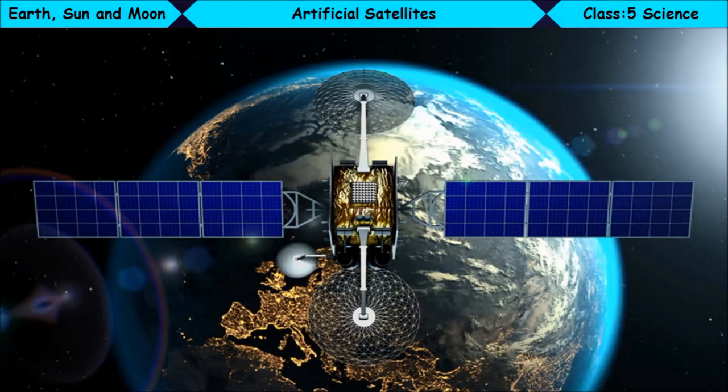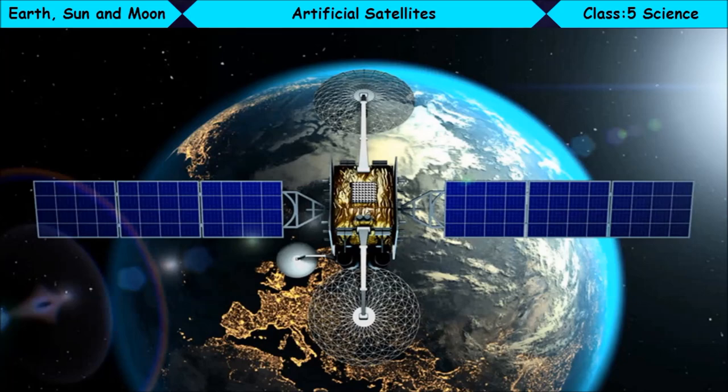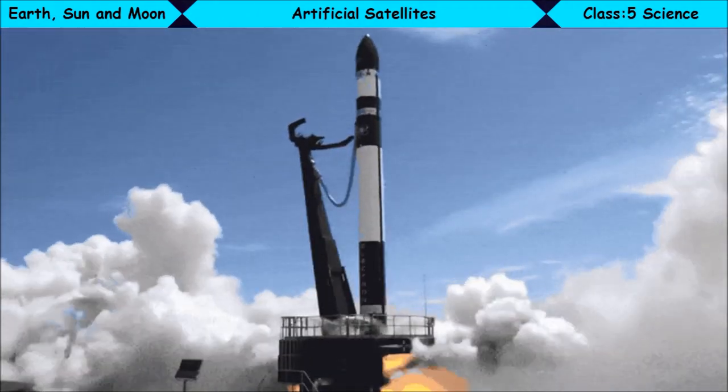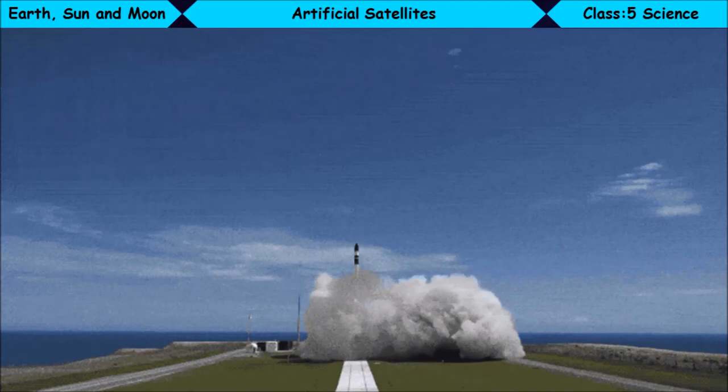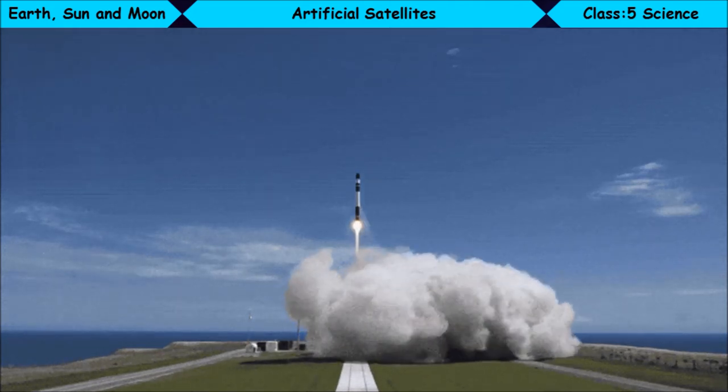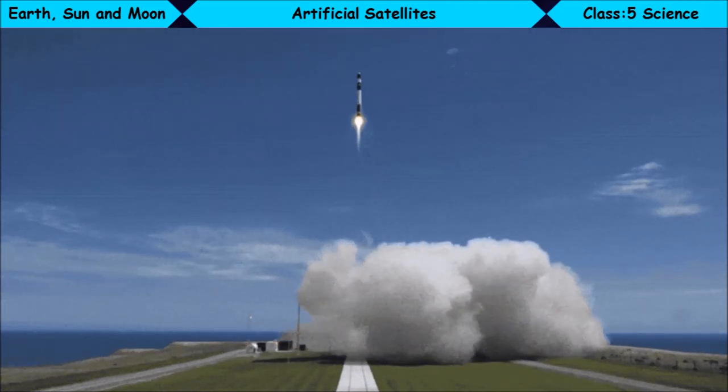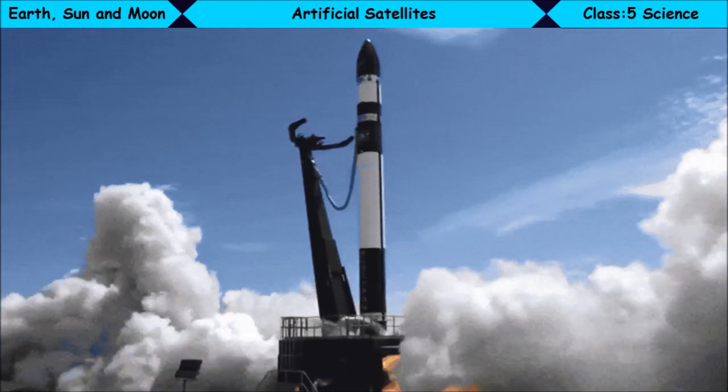Artificial Satellites. Artificial satellites are man-made objects that orbit the Earth. In order to launch satellites into space, we need to overcome the Earth's gravity. This is achieved by launching satellites with powerful rockets. There are different types of satellites, each designed for a specific purpose.